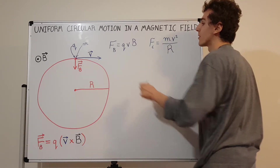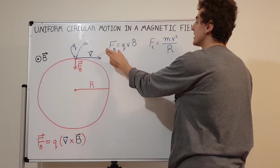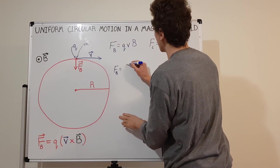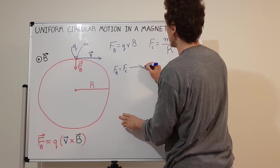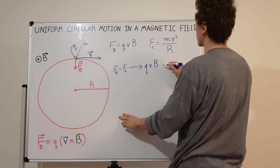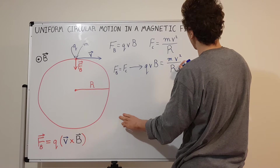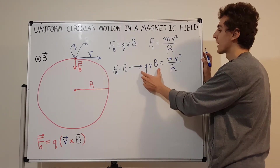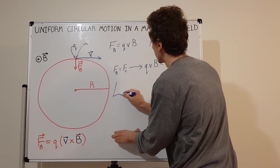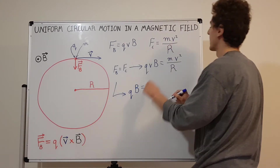We can identify that the magnetic force is exactly the same as the centripetal force, so we can set them equal: F sub B equals F sub C. That means Q V B equals mv squared over r. You can see that there's a V on both sides, so we can cancel it. What we get is Q B equals mv over r.